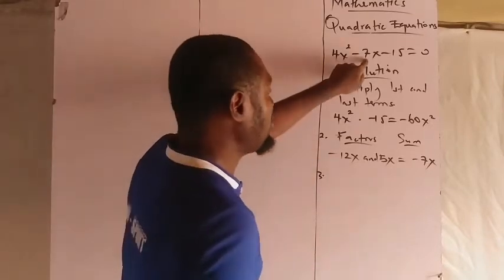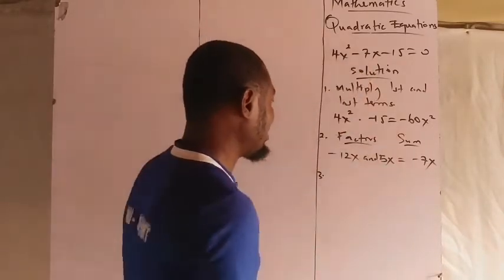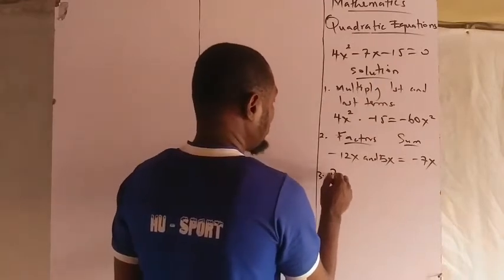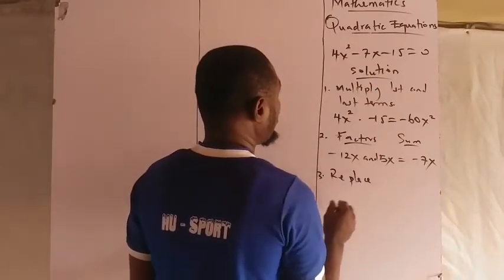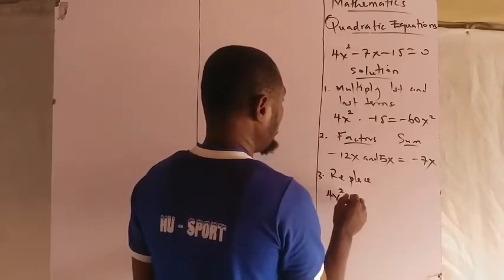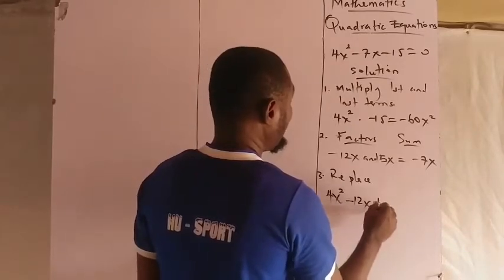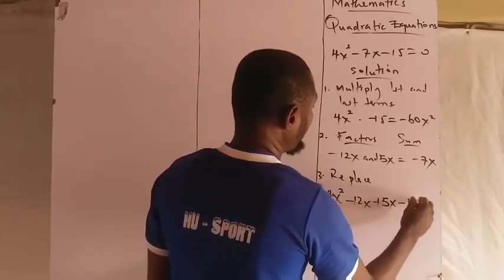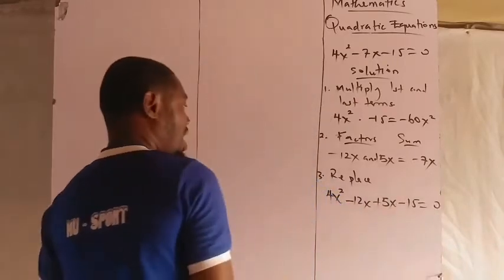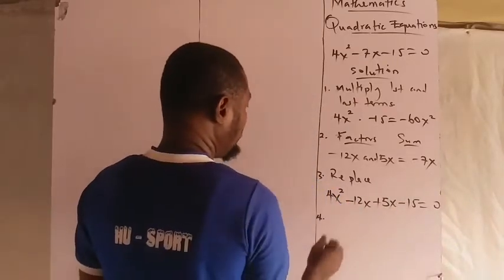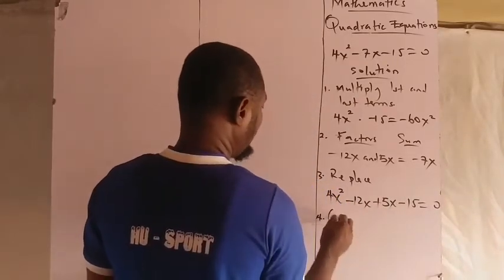I'll have 4x² - 12x + 5x - 15 = 0. Now group them: I'll have 4x² - 12x, then 5x - 15 = 0. That is grouping.